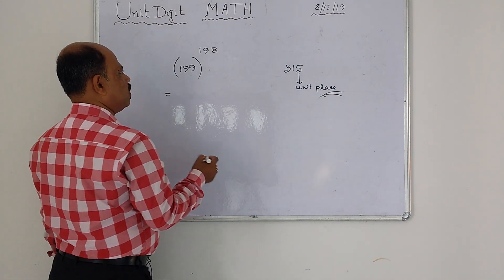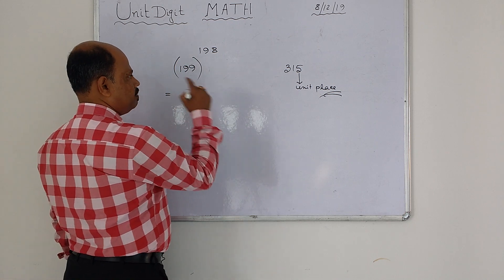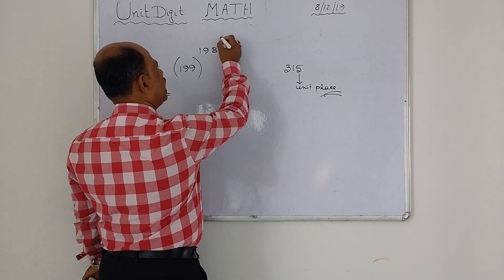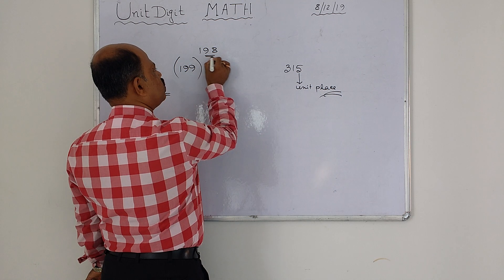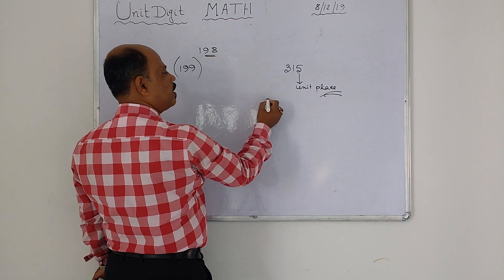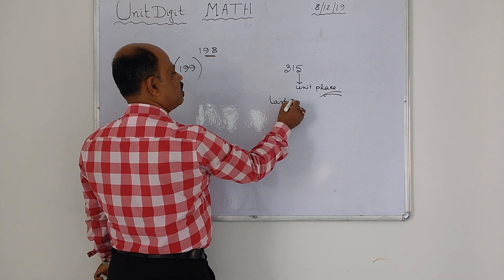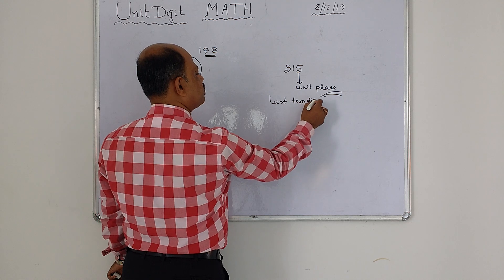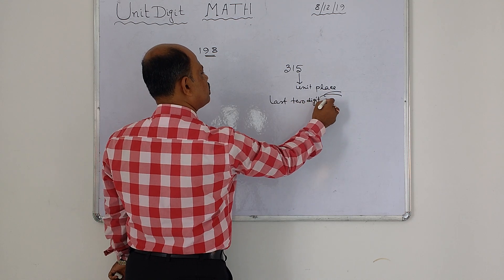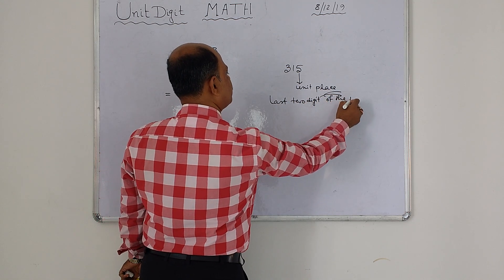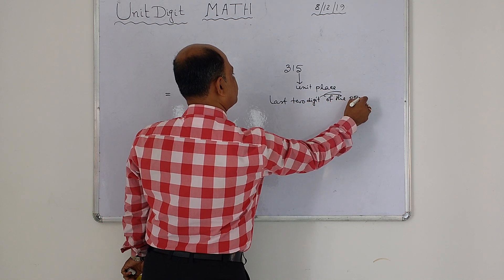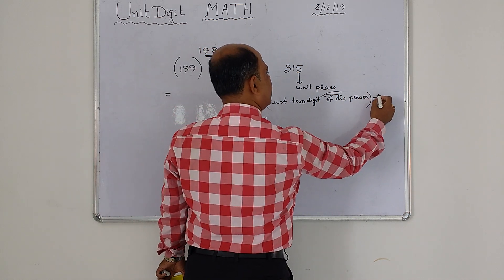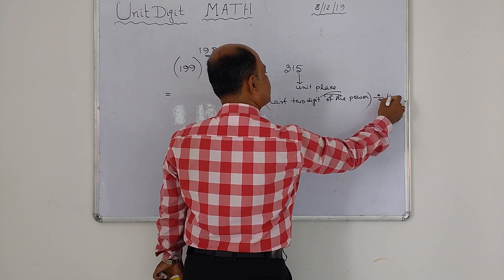Mind this rule from today. The rule is: take the last two digits of the power, divided by four.